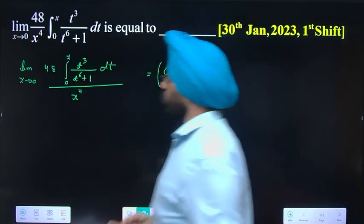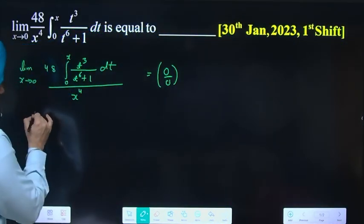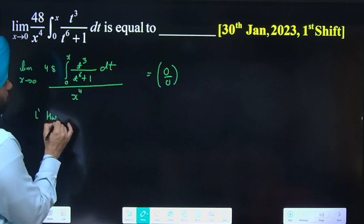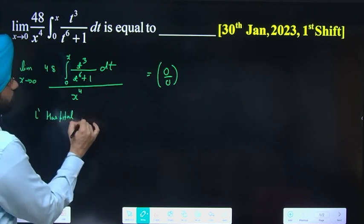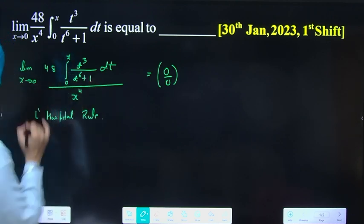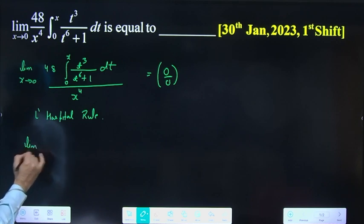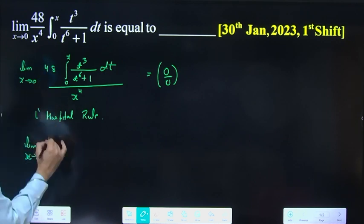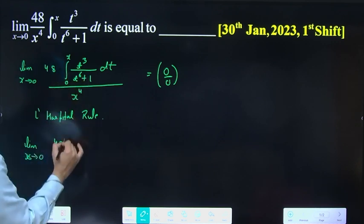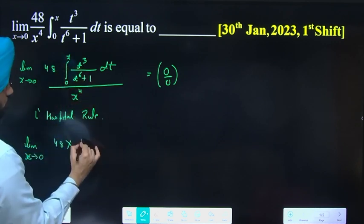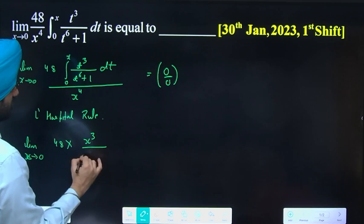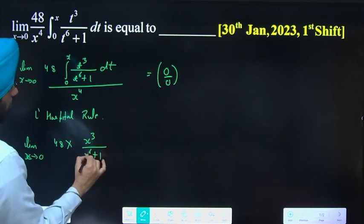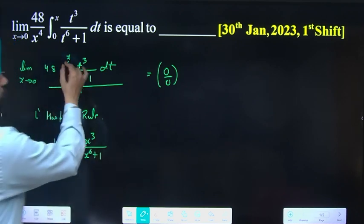Now in this question, L'Hospital rule apply. Limit x approaches to 0, 48 differentiate. Upper value put: x^3/(x^6 + 1) into differentiation of x which is 1.